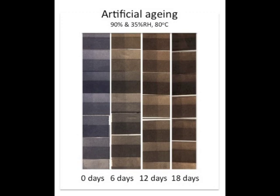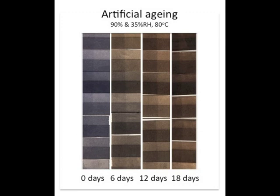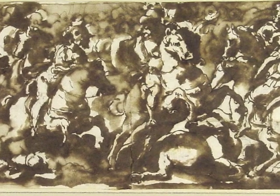Also, iron gall inks change their opacity. They become more and more opaque during the years. This is important when looking at drawings that contain iron gall ink — they will lose their tonality.